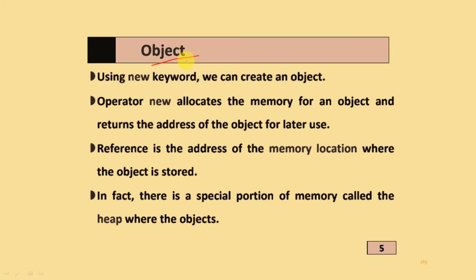In the object topic, using the new keyword we can create an object. Operator new allocates memory for an object and returns the address of the object for later use. Reference is the address of the memory location where the object is stored. In fact, there is a special portion of memory called the heap where the objects are stored.